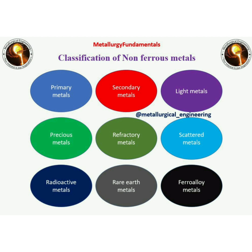We have classified non-ferrous metals into nine categories: 1. Primary metals, 2. Secondary metals, 3. Light metals, 4. Precious metals, 5. Refractory metals, 6. Scattered metals, 7. Radioactive metals, 8. Rare earth metals, 9. Ferro-alloy metals. Some other types are alkali metals and alkaline metals.